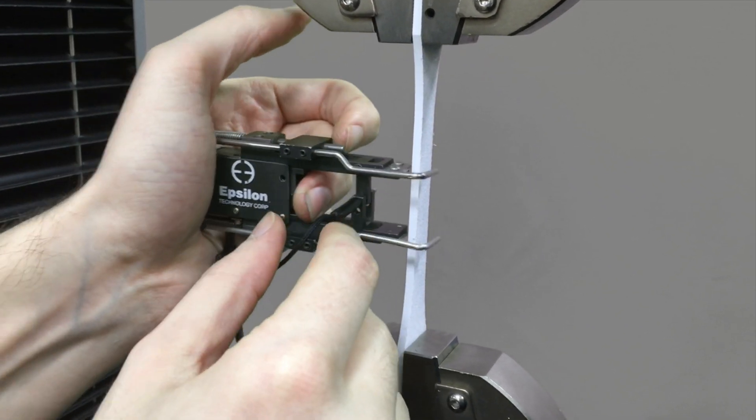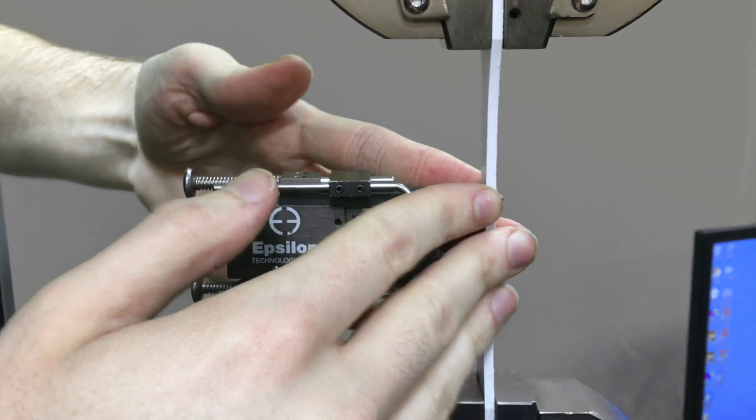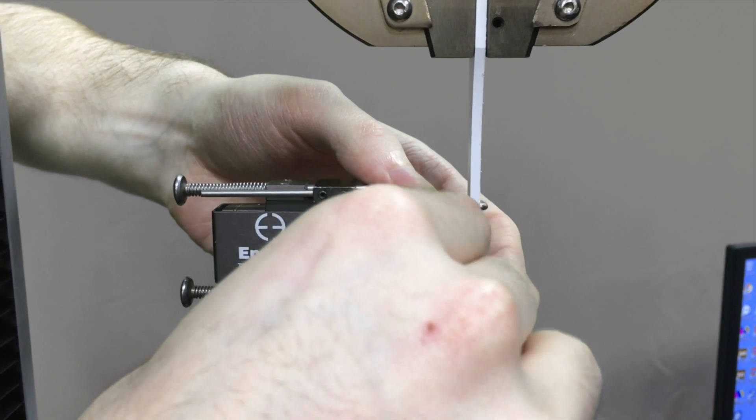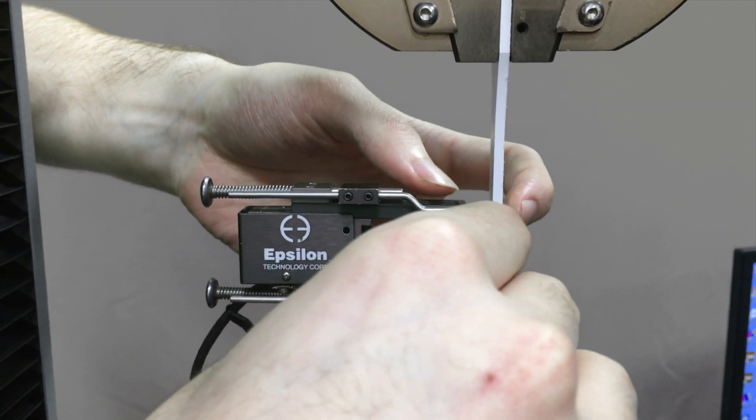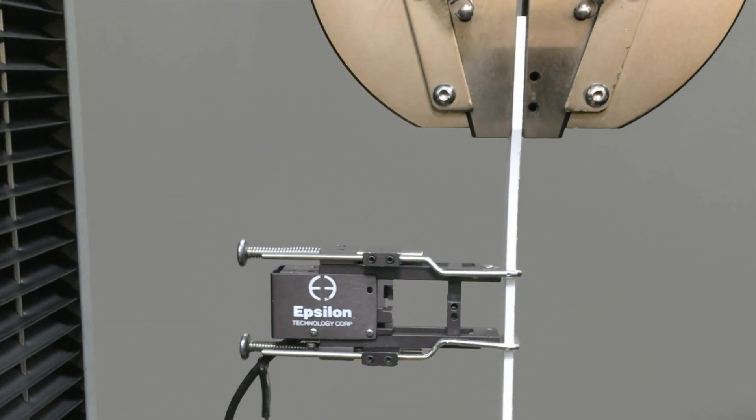Place it on. Again, make sure it's straight. Then remove the pin. This ensures that your extensometer is at its gauge length.